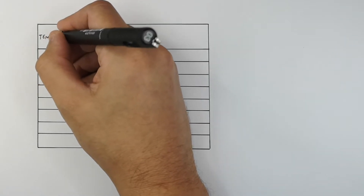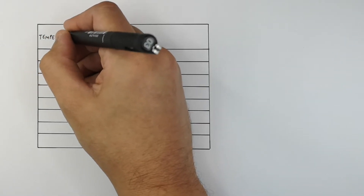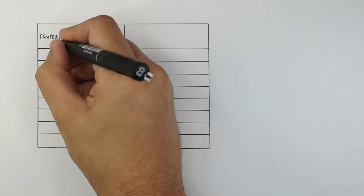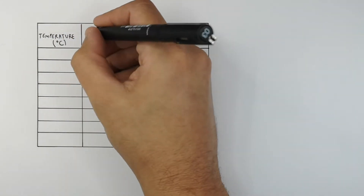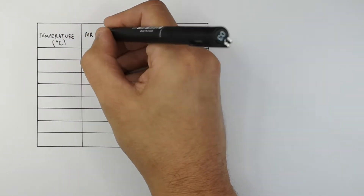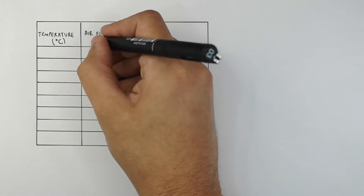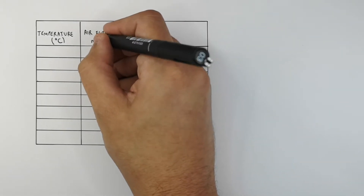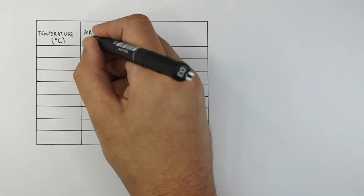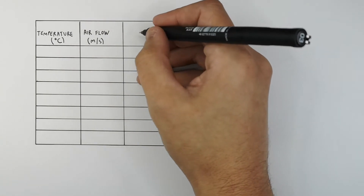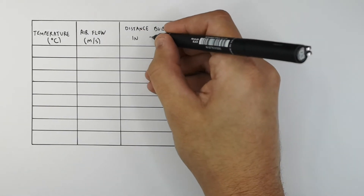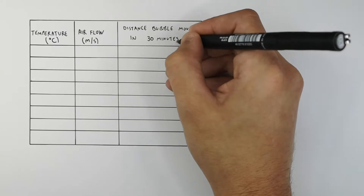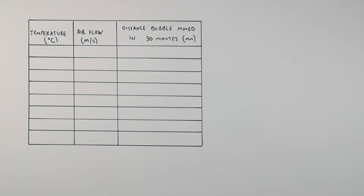In the first column we have the temperature — this is our independent variable. In the next column we have airflow directed towards the plant in meters per second, which is another independent variable. The distance the bubble moved in 30 minutes is the dependent variable — it is what we are measuring.